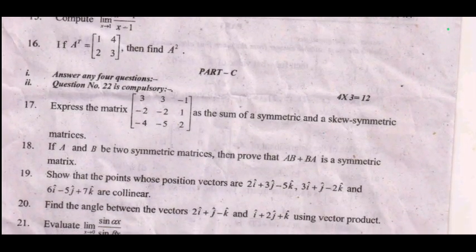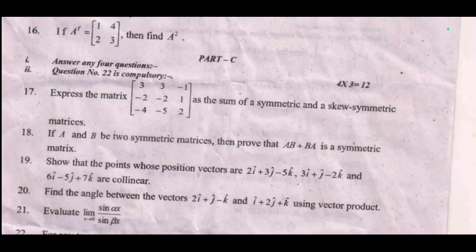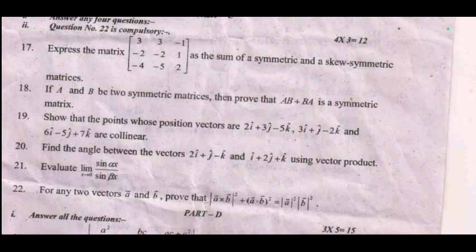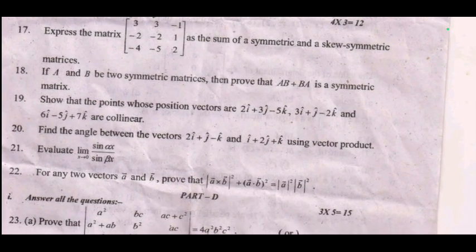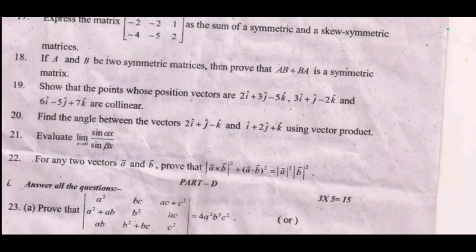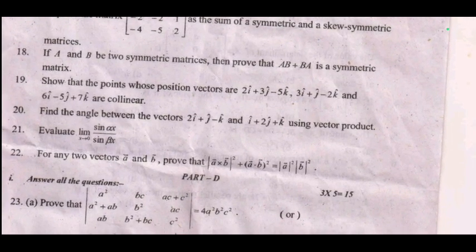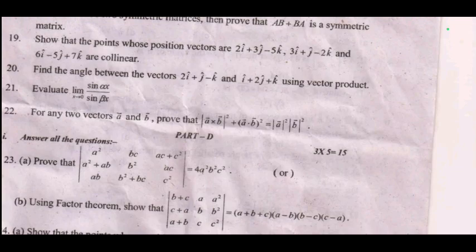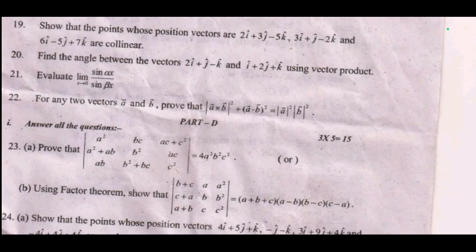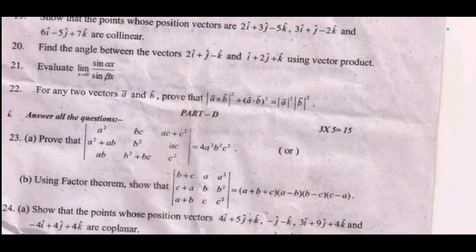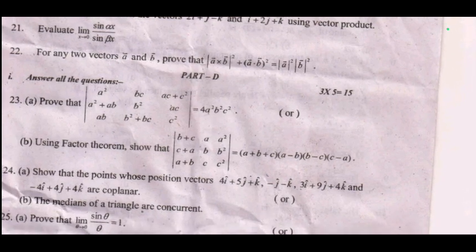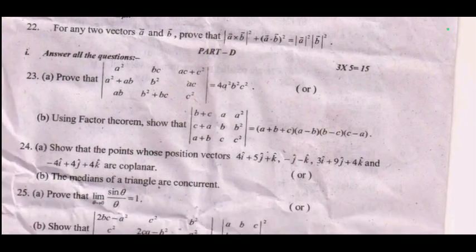Part C. Nineteenth one: if A and B are two symmetric matrices, then prove that AB plus BA is a symmetric matrix. Also show that the points whose position vectors are 2i plus 3j minus 5k, 3i plus j minus 2k, and 6i minus 5j plus 7k are collinear. Find the angle between vectors 2i plus j minus k and i plus 2j plus k using vector product. Twenty-first: evaluate the limit of sin(αx) by sin(βx).